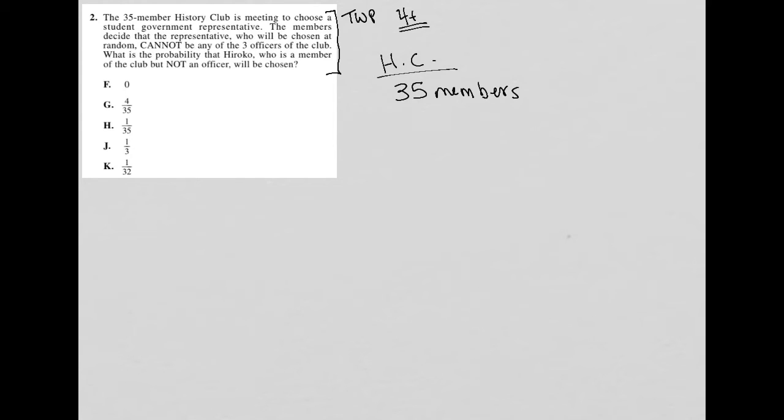Sentence two: the members decide that the representative who will be chosen at random cannot be any of the three officers of the club. So there are three officers, which means there are 32 non-officers.